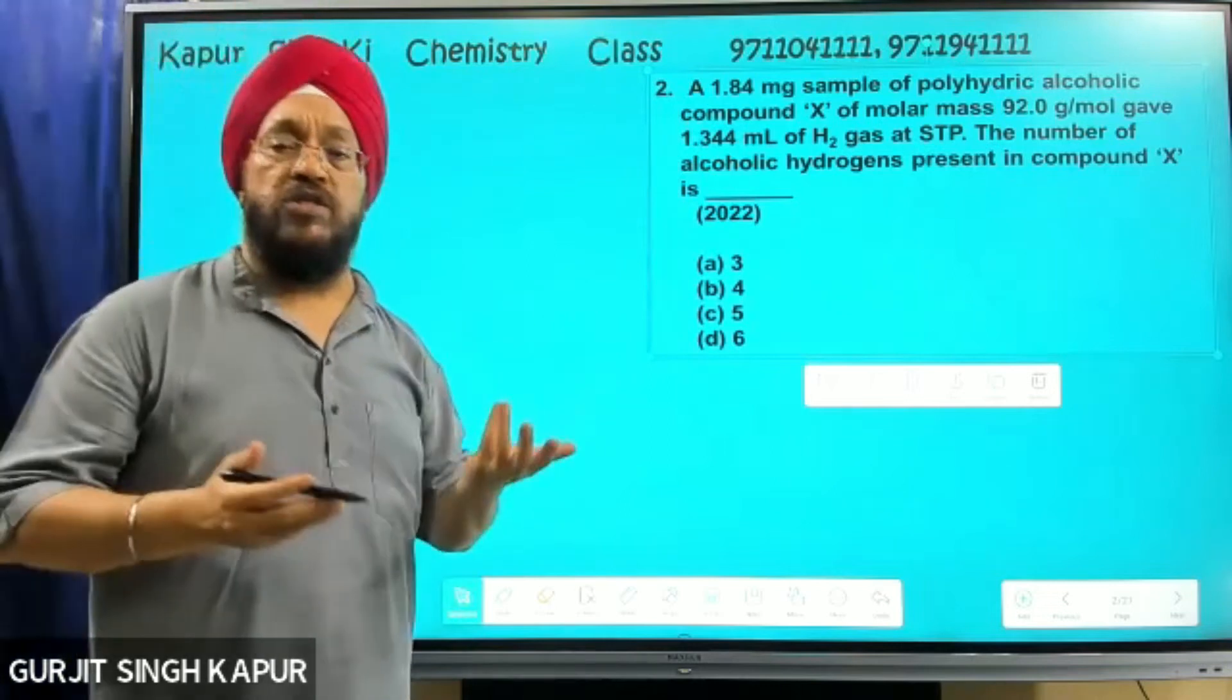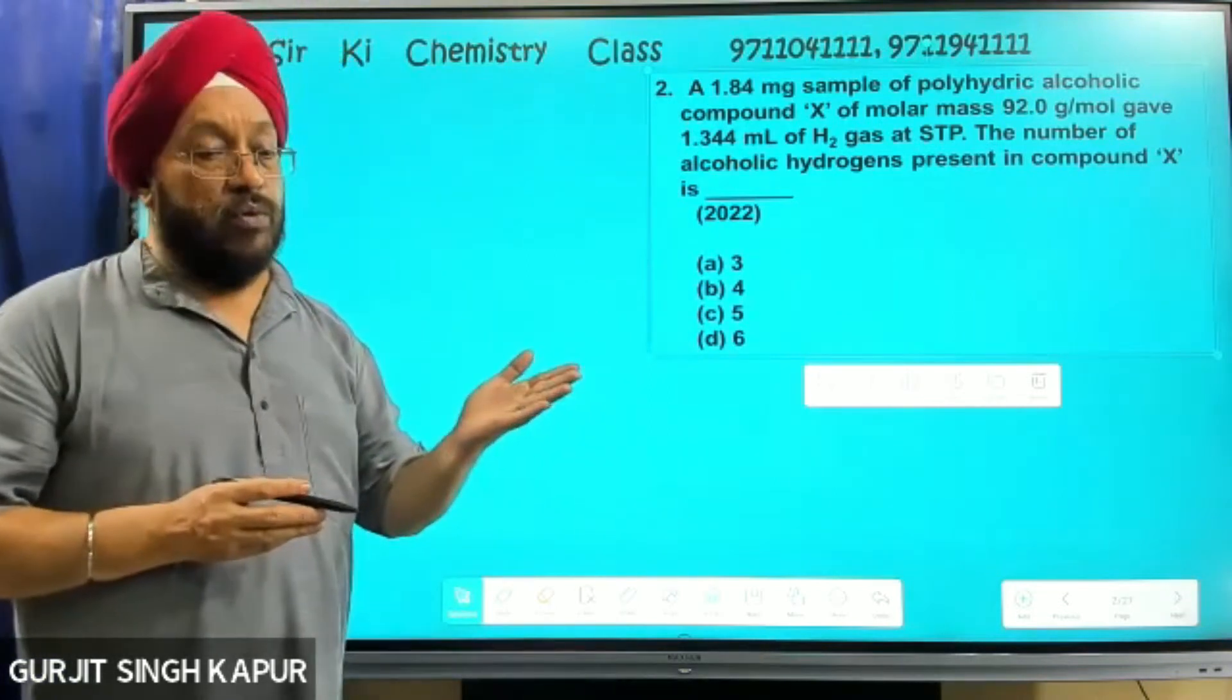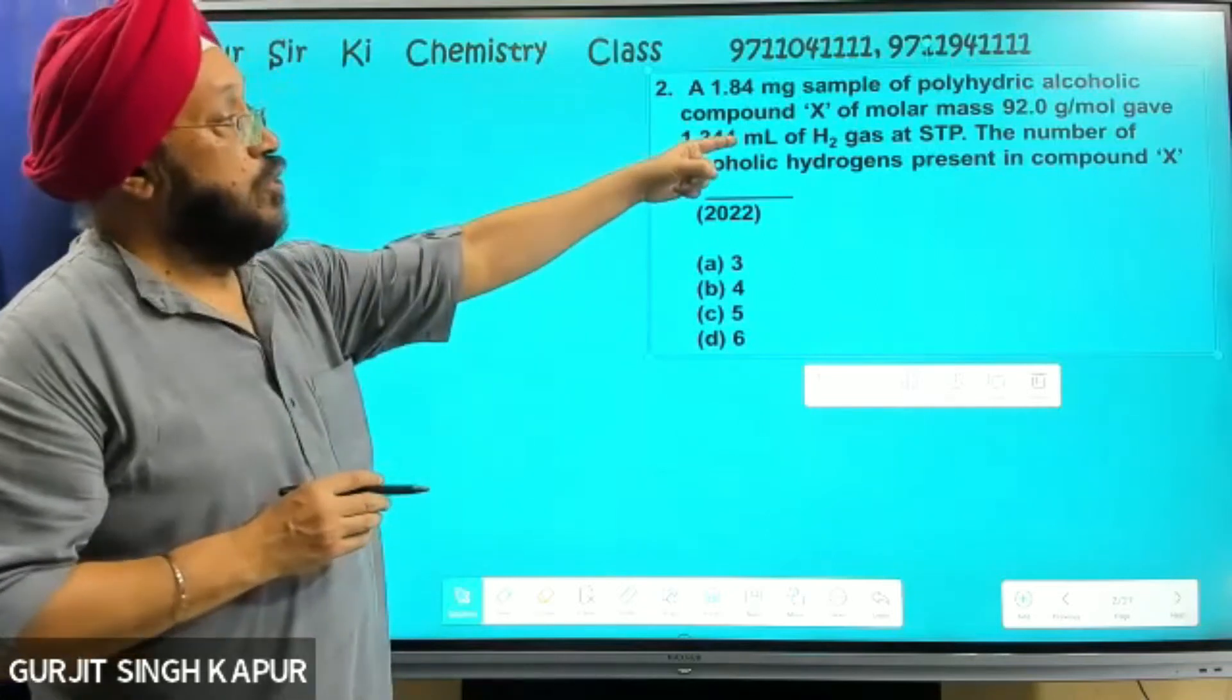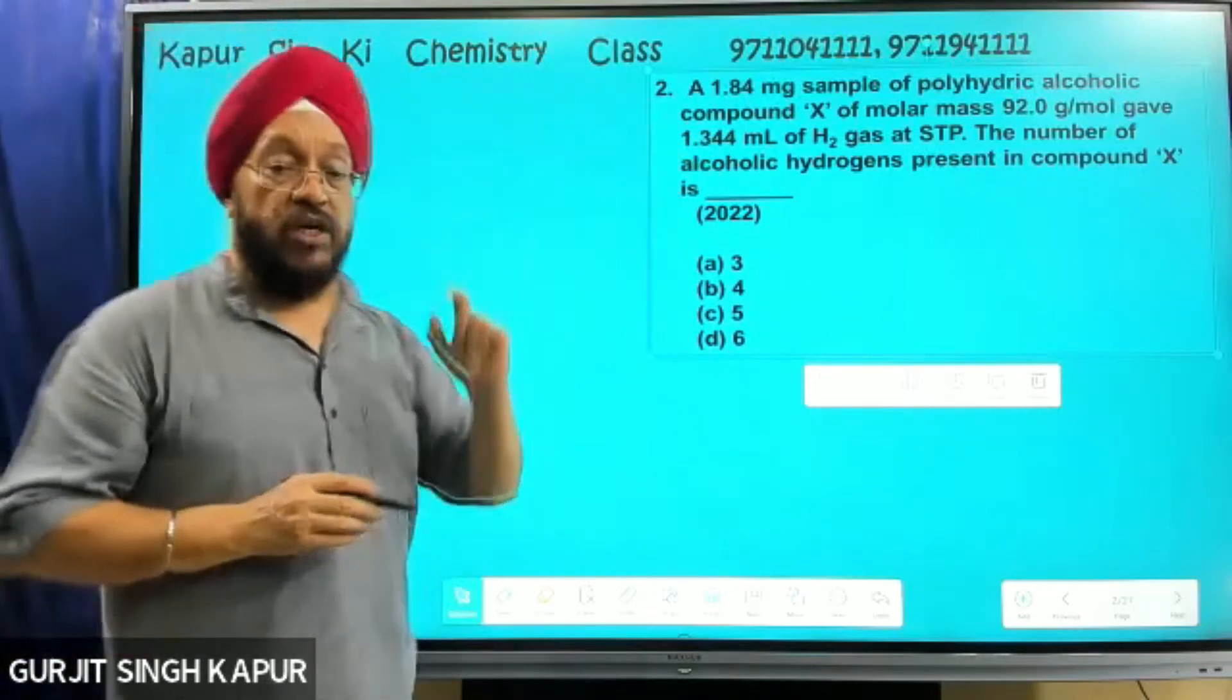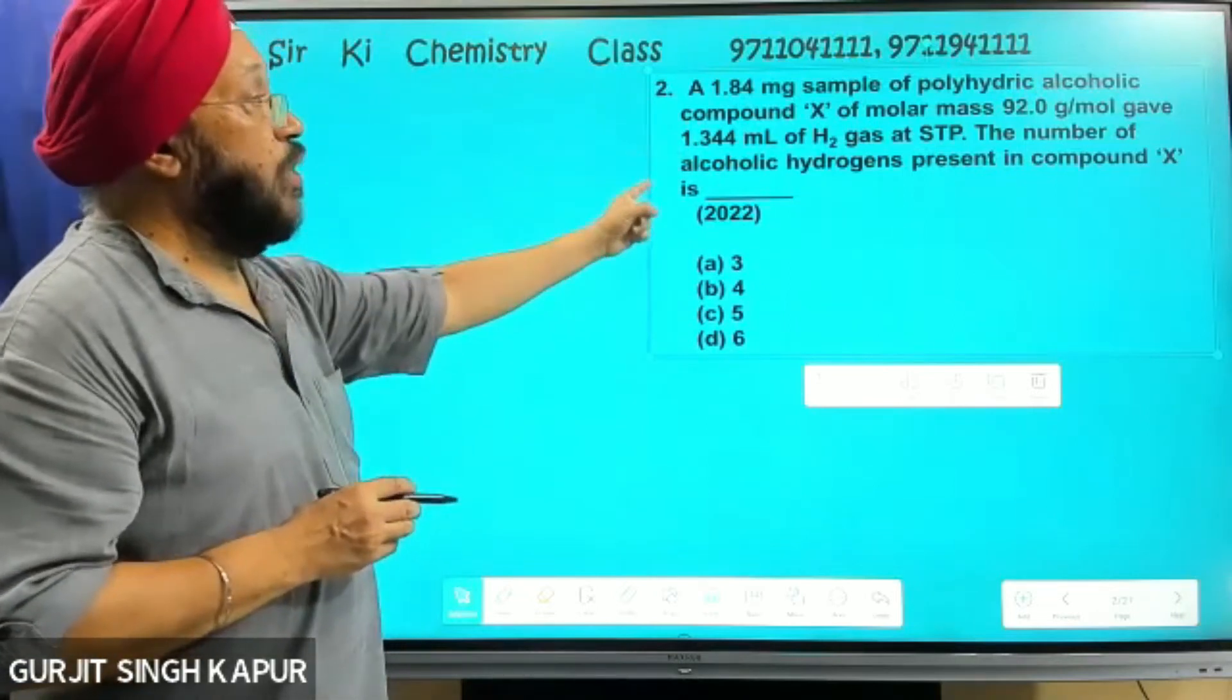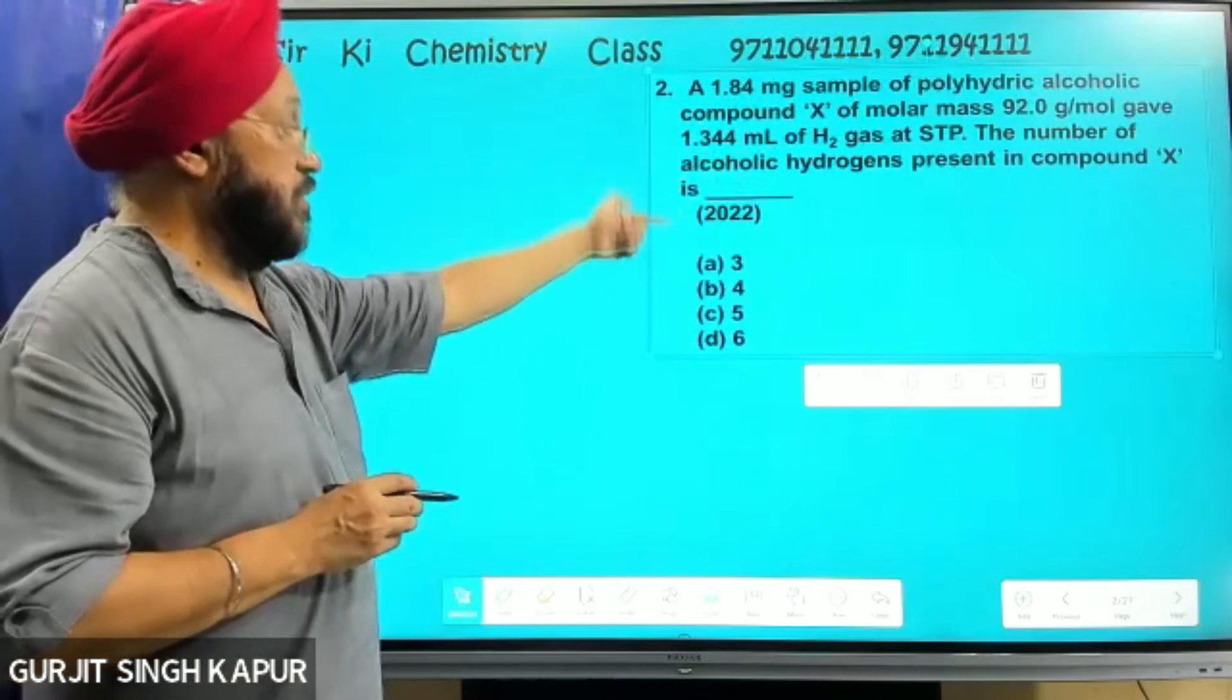STP is taken as 273 Kelvin, 1 atmospheric pressure. The molar volume under such condition is 22.4 liters. The number of alcoholic hydrogen present in compound X is...